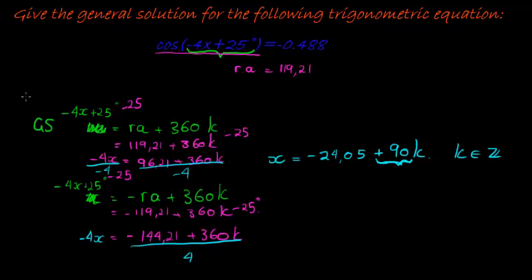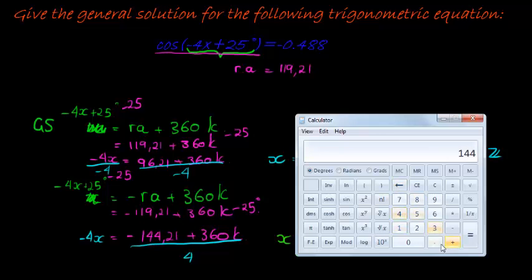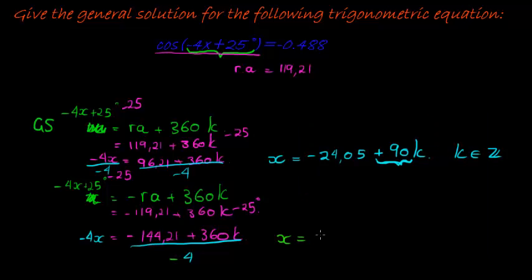For the next, for this bottom solution, we have that x is equal to negative 144.21 divided by negative 4, gives me 36.05 plus the same thing. 360 divided by negative 4 gives me negative 90, but I'm going to keep it positive 90 because it just tells me how much period I'm adding to each one. And that's it, those are my solutions.